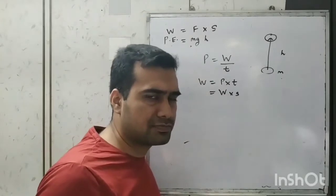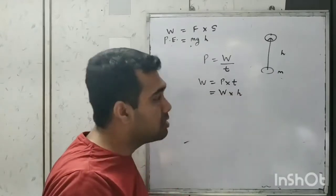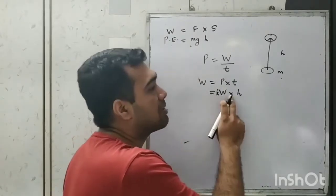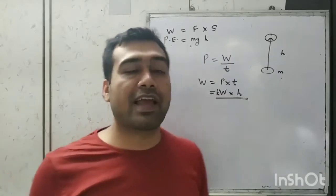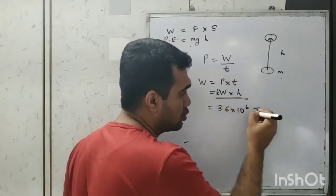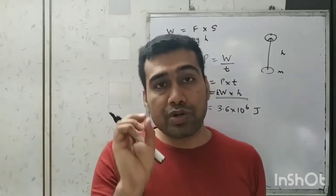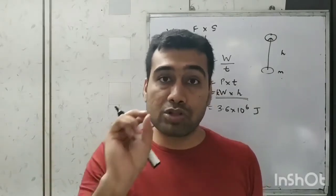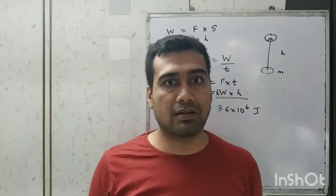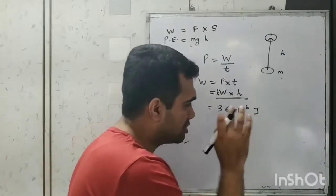We need a bigger unit to measure electrical energy, so we take time in hours: watt-hour. An even bigger unit is kilowatt-hour — 1000 watt multiplied by one hour. This is another unit of energy, equivalent to 3.6 × 10⁶ joule. Your electricity bills have units consumed measured in kilowatt-hours, because in joules it would be a very large number.